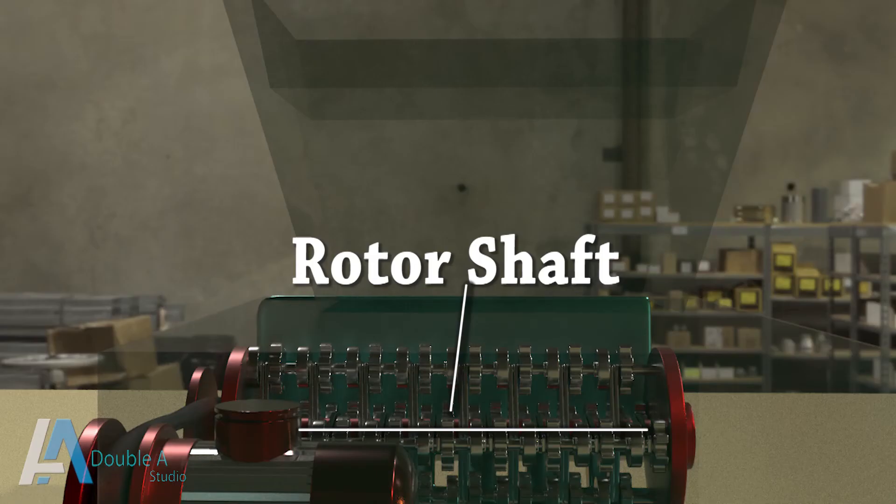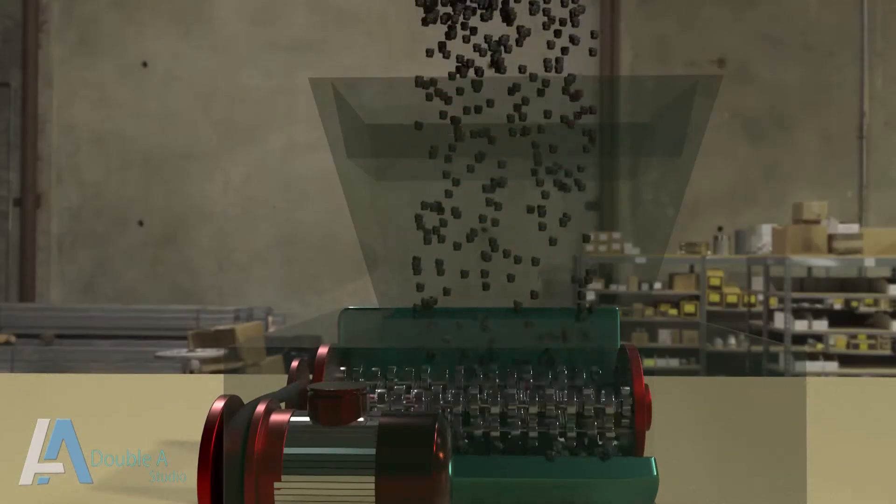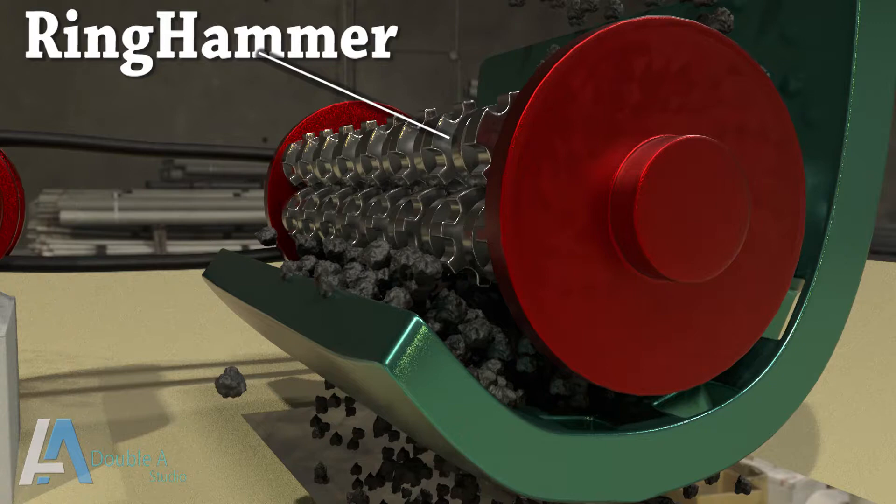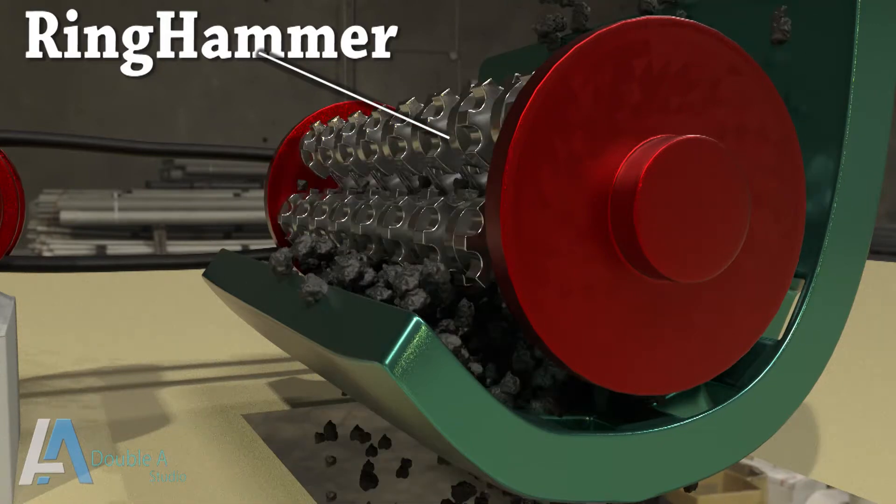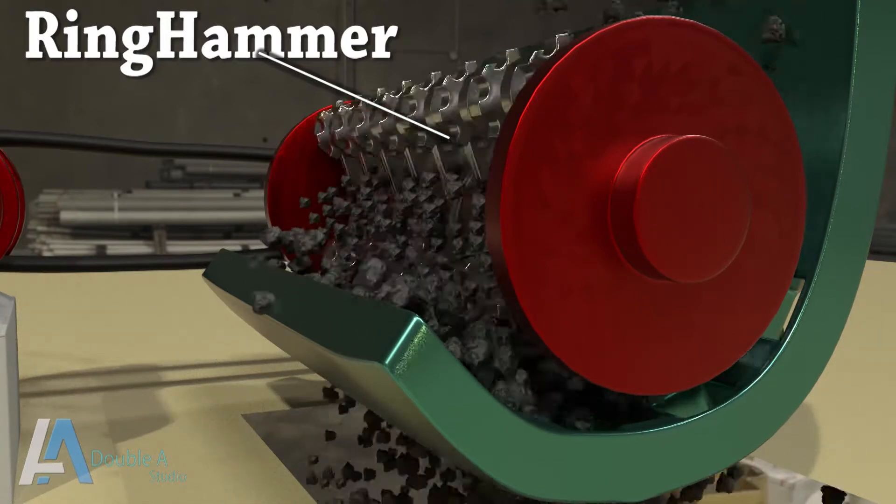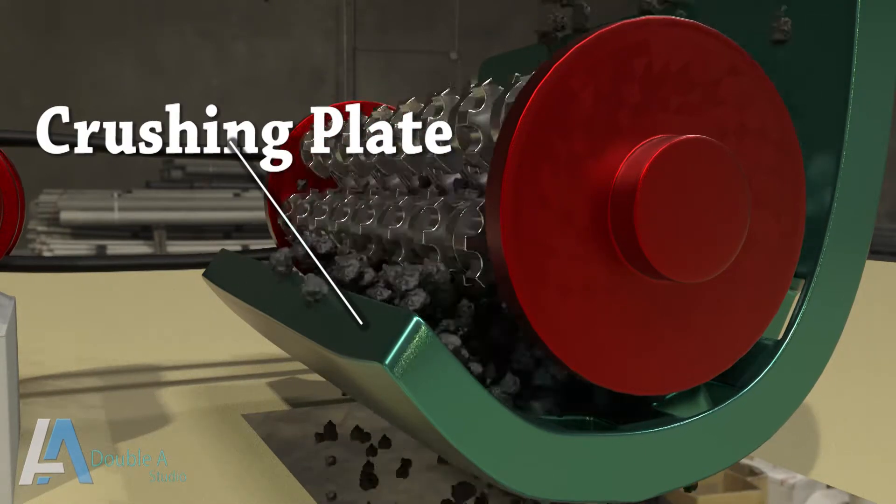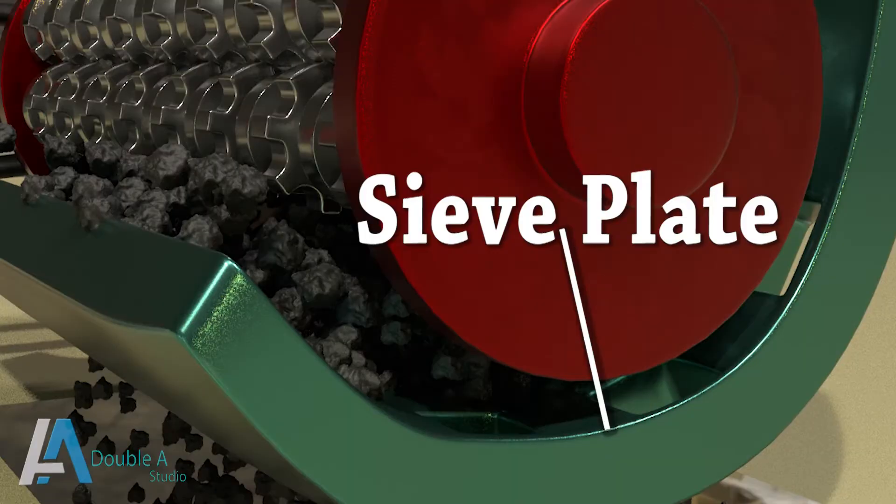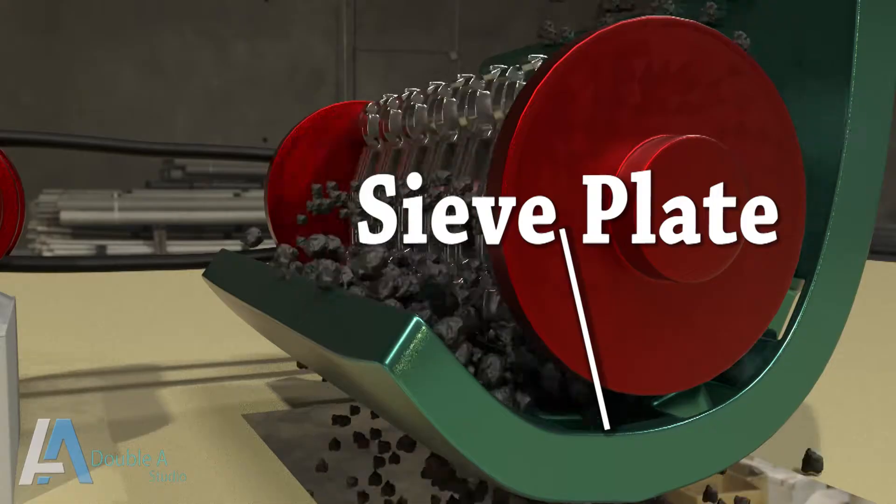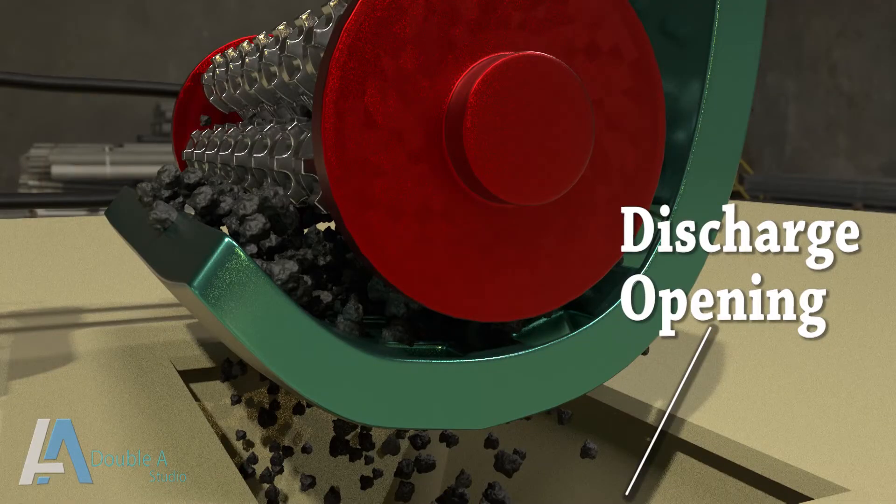It mainly consists of rotor shaft, ring hammer, crushing plate, sieve plate, and discharge opening.